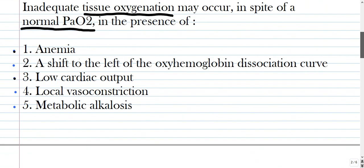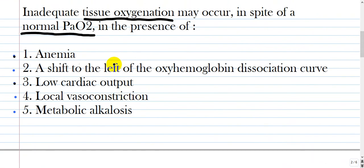Going back to the options of the question. Anemia is correct as hemoglobin concentration is dependent. A shift to the left of the oxyhemoglobin dissociation curve: once again, if this one is going to the left, oxygen release is decreased to the tissue. Low cardiac output from the formula.